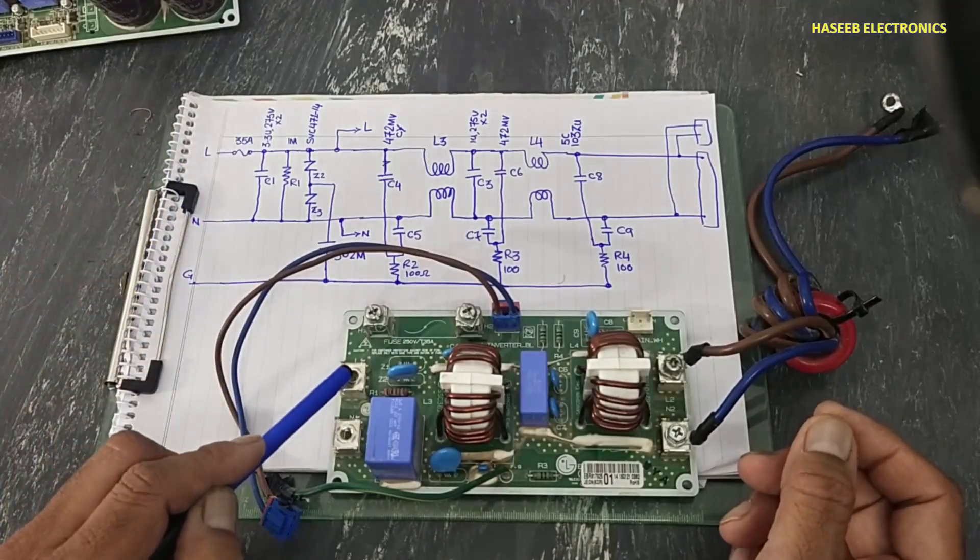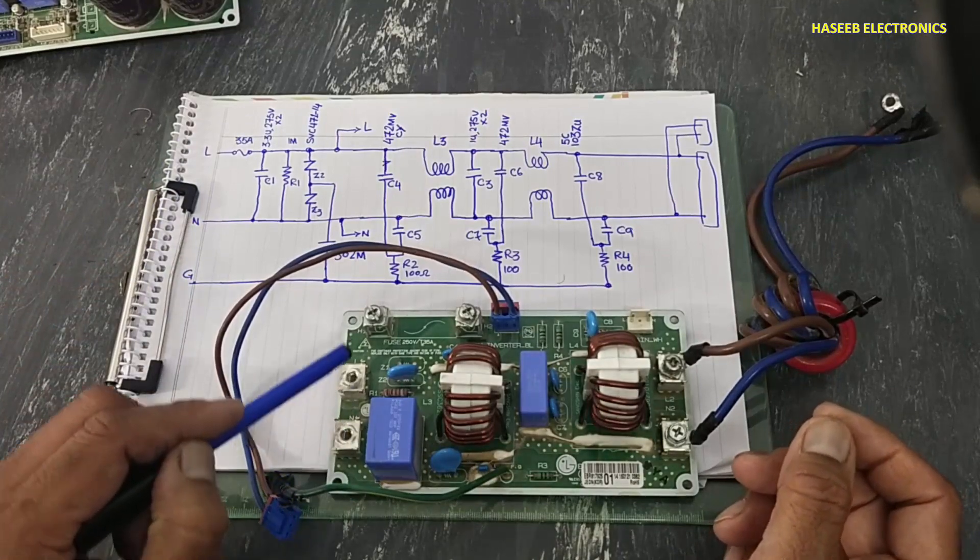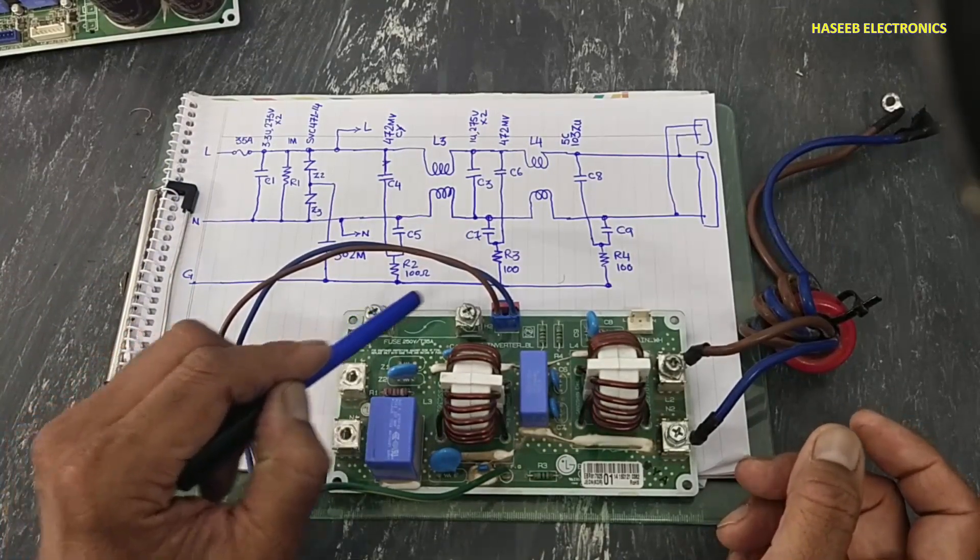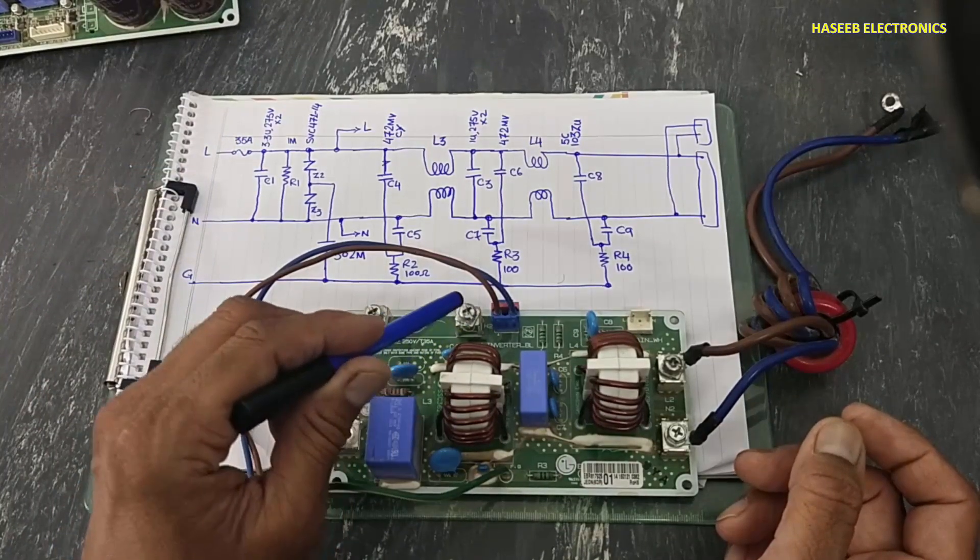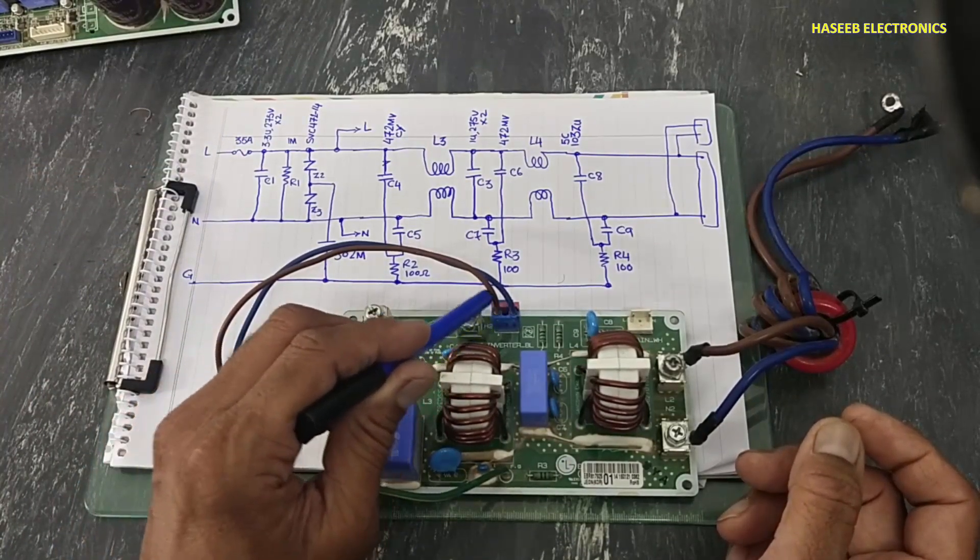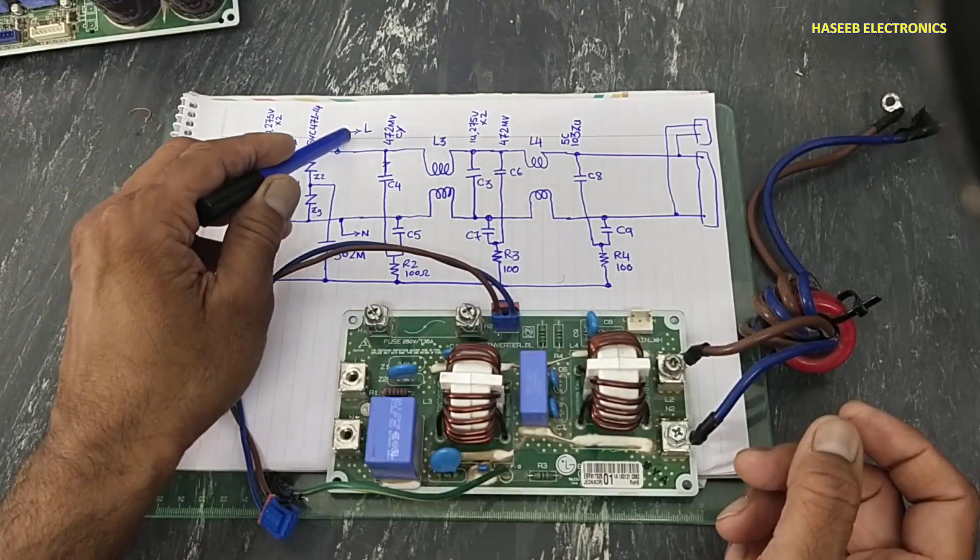This line is reaching to this terminal, here is fuse at this point - 35 ampere fuse. After fuse it is reaching to this connector, after fuse line out here and neutral out from this point.